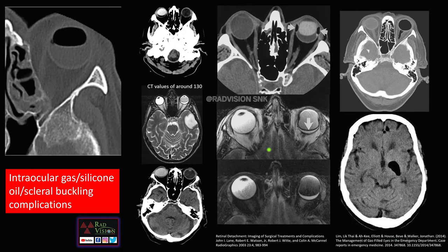Intraocular silicon oil, intraocular gas, and scleral buckling are commonly used for retinal detachment. Silicon oil has CT values of approximately 130 HU and shows chemical shift artifacts at the level of the vitreous. The common mimic is orbital hemorrhage — if HU values are around 130, suspect silicon oil or intraocular gas; orbital hemorrhage will be less than 130 HU. Intraocular oil is clearly seen on fat-suppressed sequences and can sometimes leak along the optic nerve, even extending to an intracranial location.